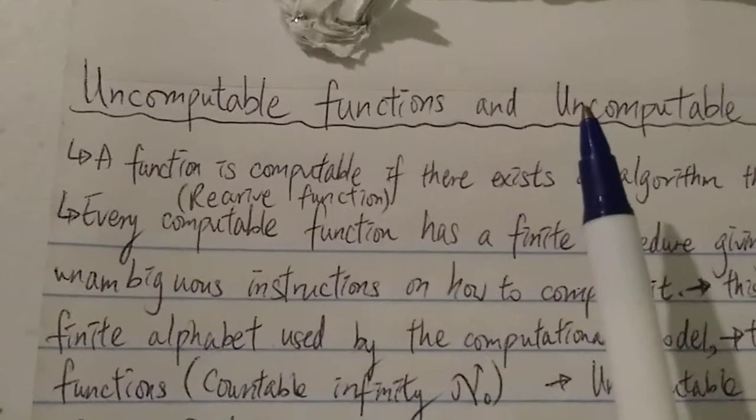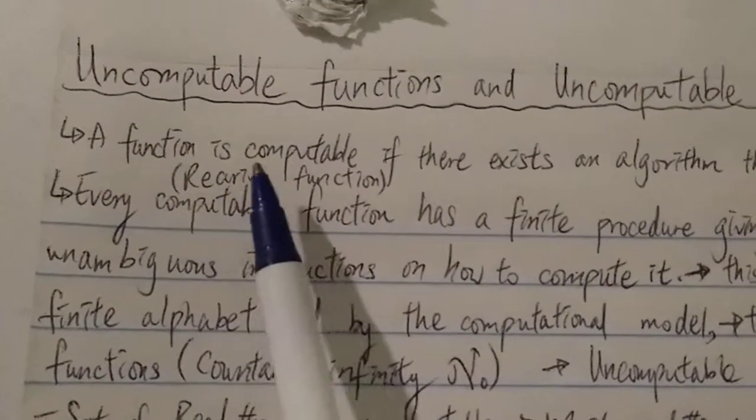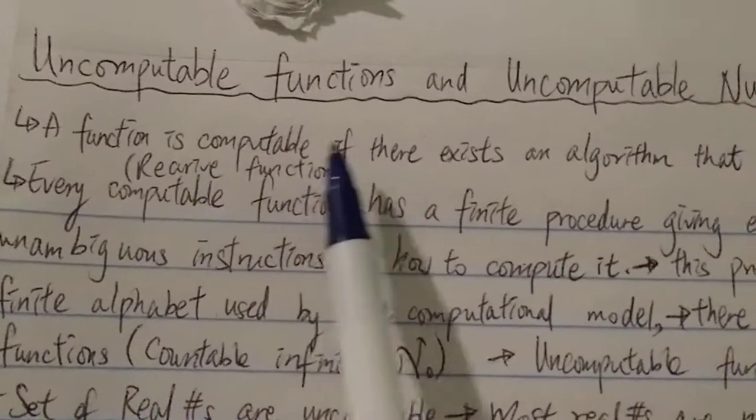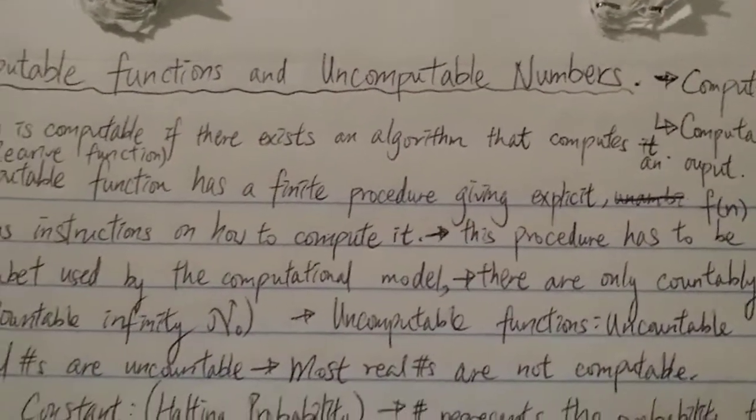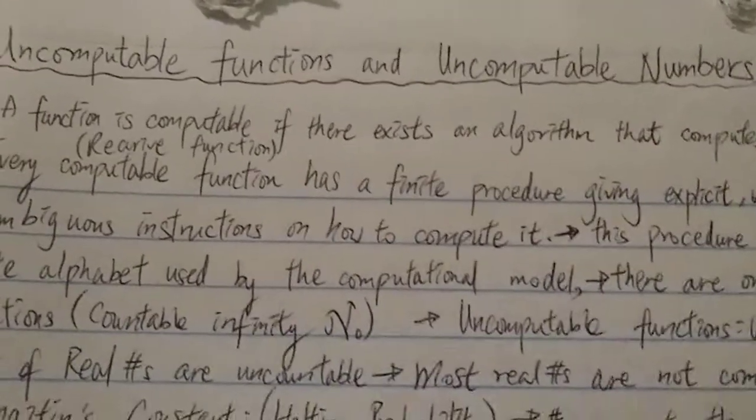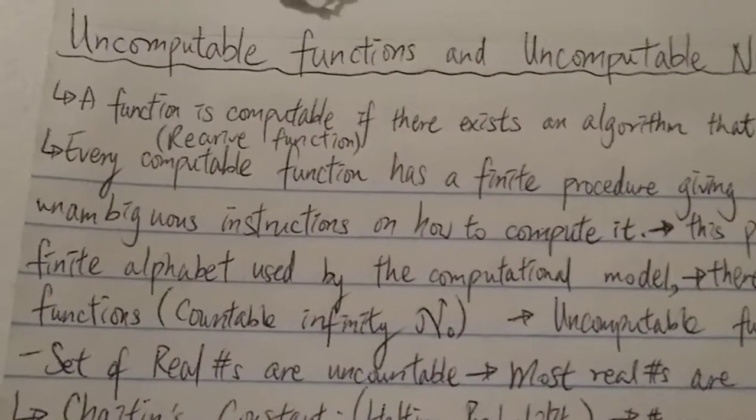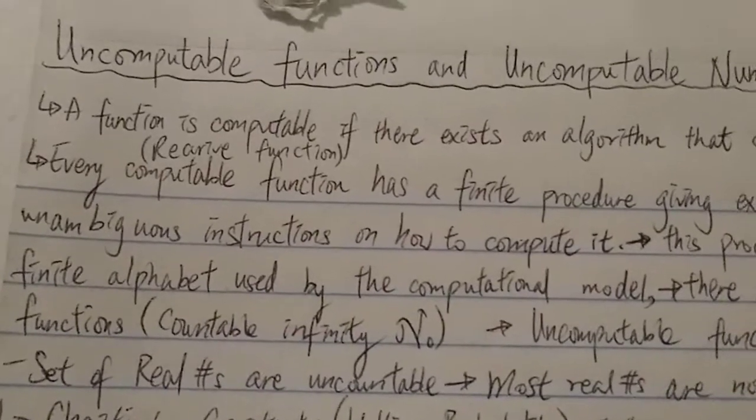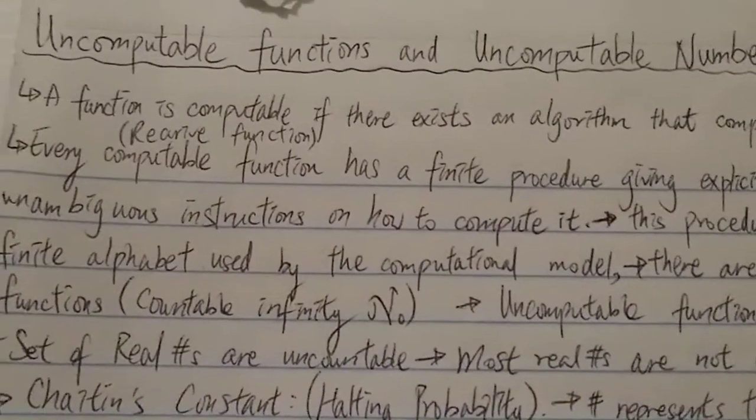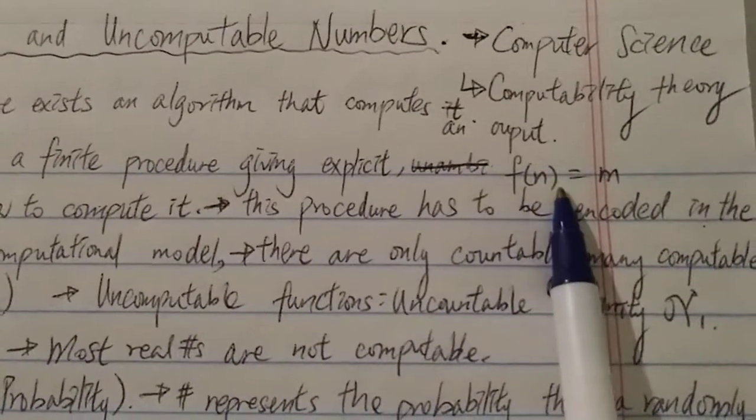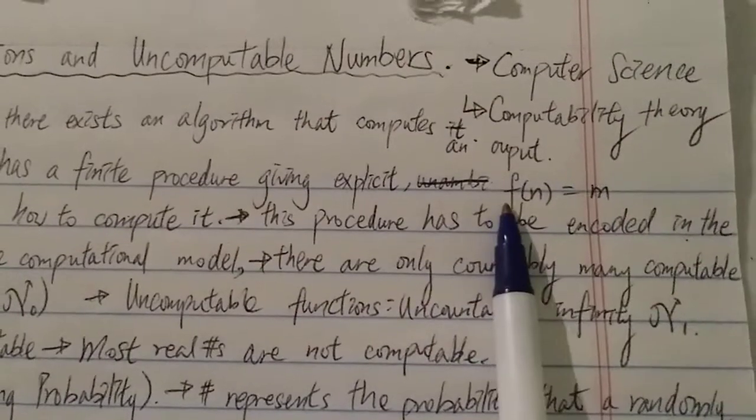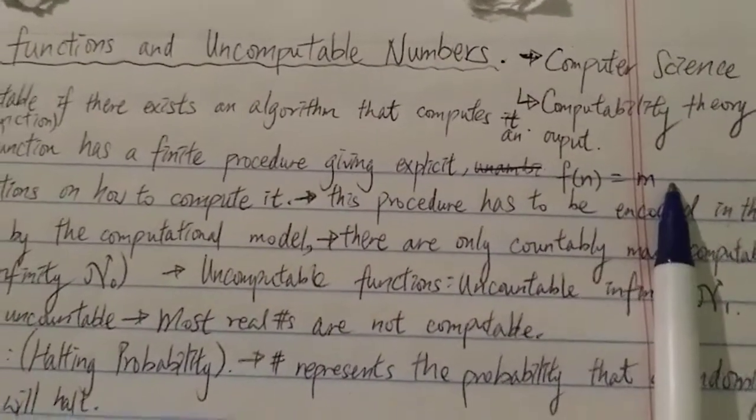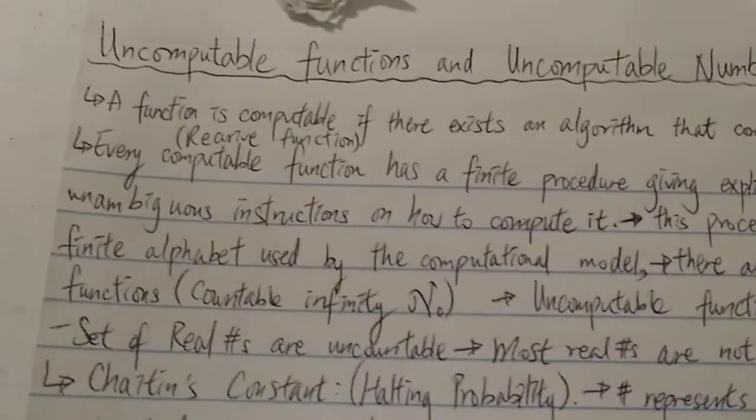First of all, what is a computable function? A function is considered computable if there exists an algorithm that computes an output. Basically very simple - if there's an algorithm, you can say it's computable. If there's no algorithm to compute it, then it's uncomputable. Let's say you have a function f(n) = m, where n is the input, f is the algorithm, and m is the output. This would be a computable function.